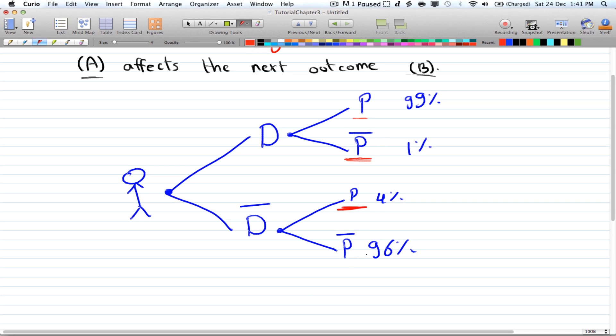Here the positive is 99%, and here it's 4%. And that's what we mean by the probability of, or the outcome of B depends on the outcome for A. So here's the outcome A.